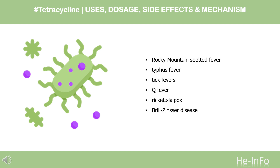What is tetracycline used for? It is used to treat bacterial infections such as Rocky Mountain Spotted Fever, Typhus Fever, Tick Fever, Q Fever, Rickettsial Pox, and Brill-Zinsser Disease. It may also be used to treat infections caused by Chlamydia spp., B. burgdorferi (Lyme disease), and upper respiratory infections caused by S. pneumoniae, H. influenzae, M. catarrhalis, and atypical organisms C. pneumoniae, M. pneumoniae, and L. pneumophila. It may also be used to treat acne, and may be an alternative drug for people who are allergic to penicillin.